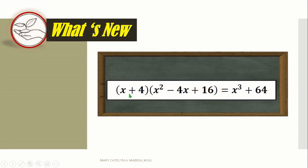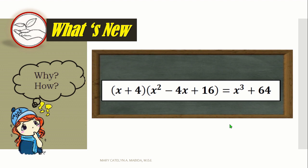We have the quantity of x plus four times the quantity of x squared minus four x plus sixteen is equal to x cubed plus sixty-four. But why is that so? And how did that happen? Now, let's check it out.